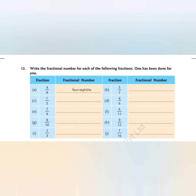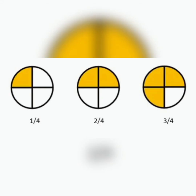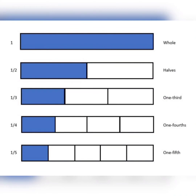Now look at some examples. In the first figure, there are four equal parts and one part is colored — so the fraction for the colored part is one upon four. In the second figure, two parts are colored — fraction is two upon four. In the third figure, three parts are colored — fraction is three upon four.